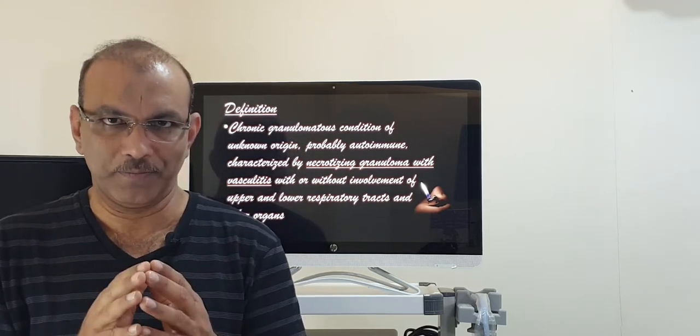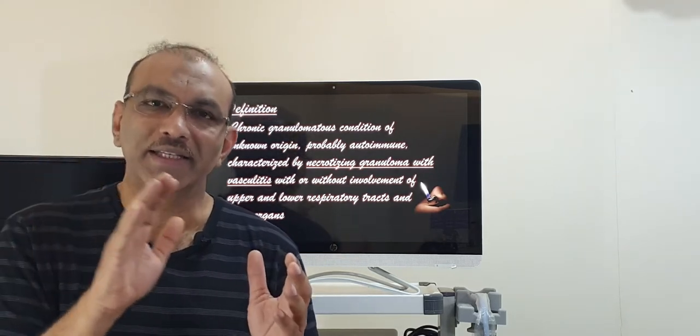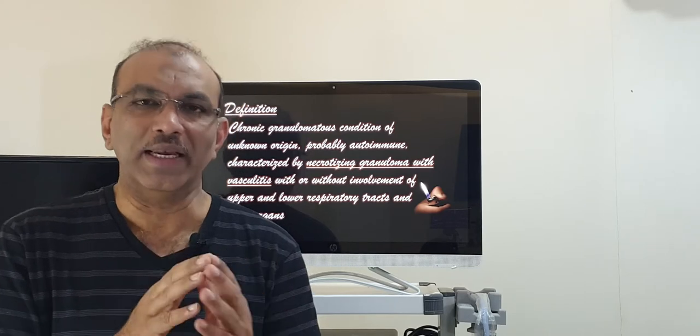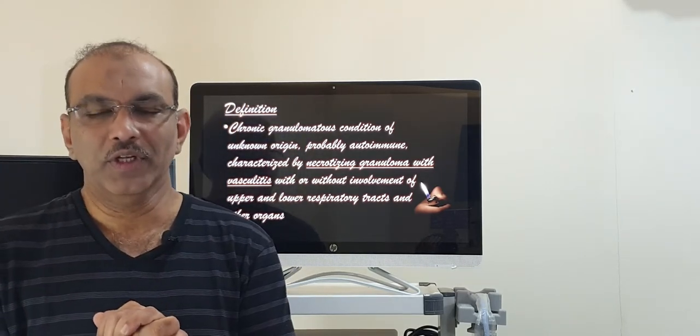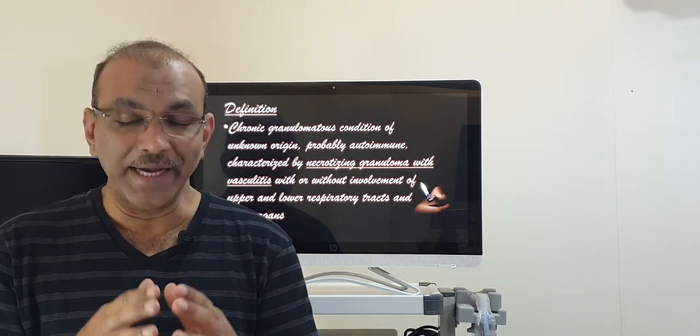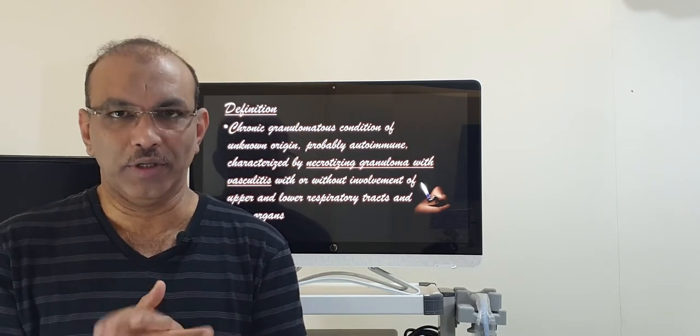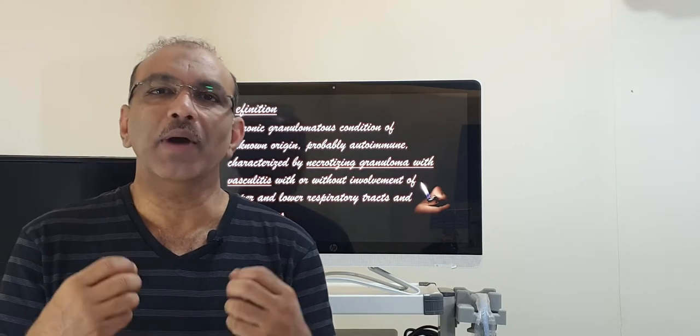These antibodies act against the neutrophils. In these neutrophils they have granules. So they act against these granules specifically and it hyperactivates the neutrophils. So these antibodies are called antineutrophilic antibodies. So neutrophils become hyperactive.